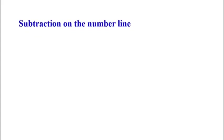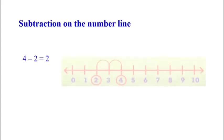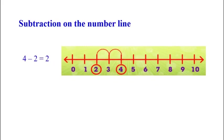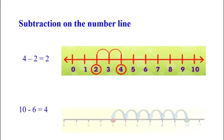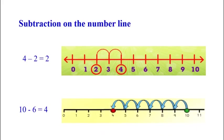Then subtraction on the number line: 4 minus 2 is equal to 2. Here on the number line, in the case of subtraction, we start from 4 and move 2 units towards the left, and we reach at 2. So 4 minus 2 is equal to 2. Another example: 10 minus 6 is equal to 4. We start from 10 and move 6 units towards the left, and we reach at 4.